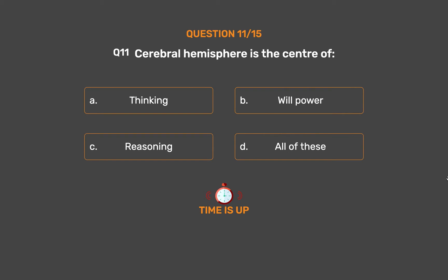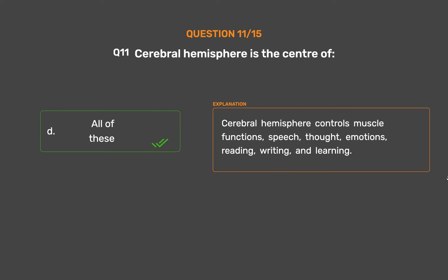The correct answer is Option D, All of these. Cerebral hemisphere controls muscle functions, speech, thought, emotions, reading, writing, and learning.